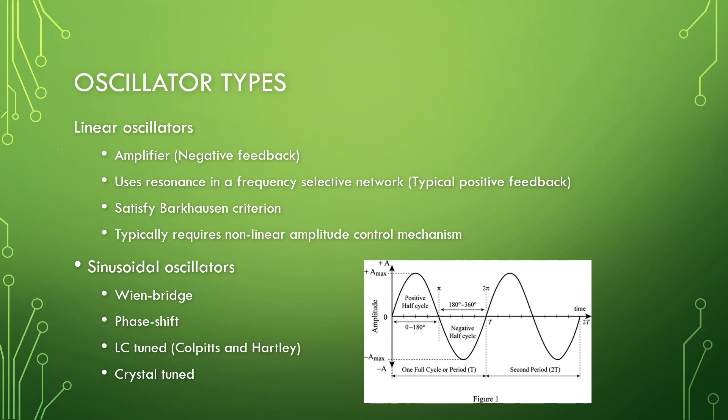So oscillator types. We get linear oscillators that typically has an amplifier of some negative feedback to stabilize your gain. And then it will use some form of resonance in a frequency selective network to choose the oscillation frequency, and this is typically a positive feedback network. So, in terms of oscillation we need to satisfy Barkhausen's criterion. So there is some criteria that needs to be met for us to build an oscillator. So we will be looking at the maths of this later in the video.